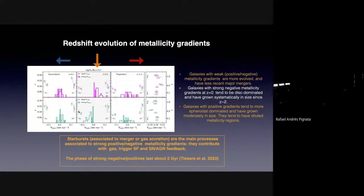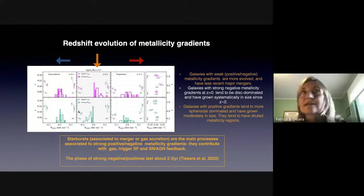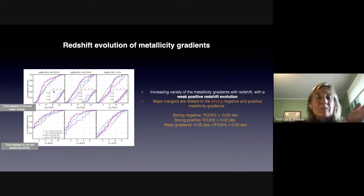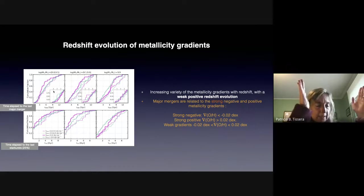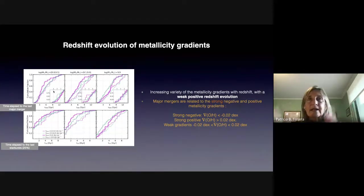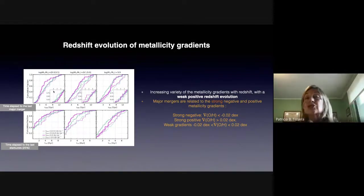In summary for this part: we estimated the samples at each available redshift, selected the galaxies, and measured the metallicity gradients in each sample independently at each redshift. So we are not following the progenitors exactly.